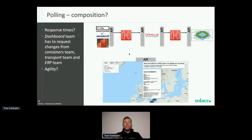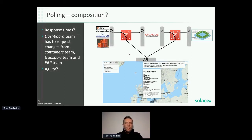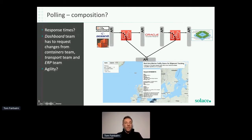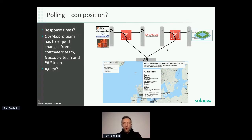How do we craft this together? We could use a common API technique: composition. We'd have our existing APIs calling out to our dashboard API. But the problems are: response times suffer because we've created a chain of execution, and the dashboard team has to request changes from three different teams — containers, transport, and ERP. That's not agile: you've got to get on everyone else's workbook and agree changes.